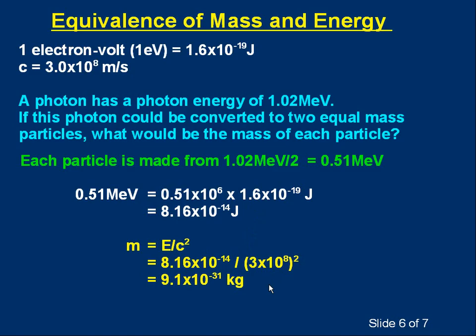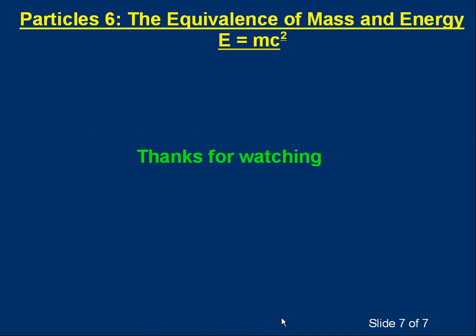I hope you got the answer. And if you've done a few calculations in the past, you may recognize this number. This number is roughly the mass of an electron. So what this is saying is this energy photon, this photon this big, if it could be converted into two particles of equal mass, the particles would each have the mass of an electron. And it turns out this is possible. You can produce a particle and an antiparticle from this photon, an electron and its antiparticle, which is called a positron. And when you learn about particles and antiparticles, this will make more sense. The mass of each particle is 9.1 times 10 to the minus 31 kilograms, which is the same as the mass of an electron. OK, well, I hope that was useful. Thank you for watching.